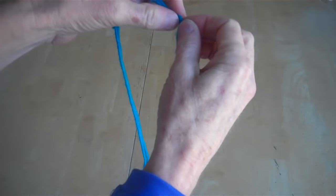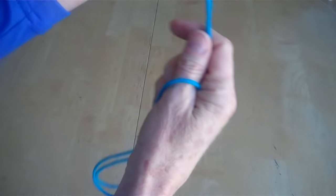First thing you need to do is double up your string. Normally you're going to have a longer string for most of your string figures. You should be able to wrap it around your elbow for a normal length.